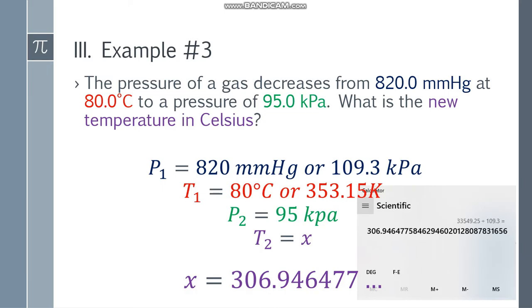Divide both sides by 109.3, and you'll get an answer of 306.94647 and so on. How do we round this? Check the number of significant figures: 820.0 has 4, 80.0 has 3, 95.0 has 3. So 3 significant figures is the least. Count 1, 2, 3, cut. Since it's 9, round up. It becomes 307.